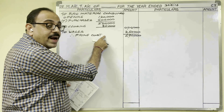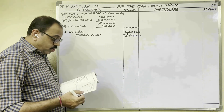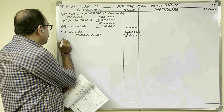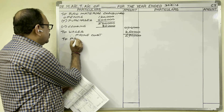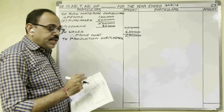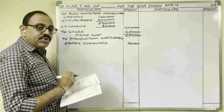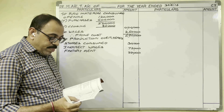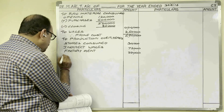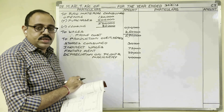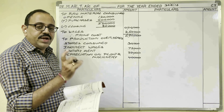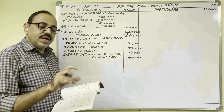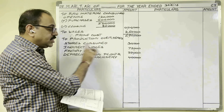To the prime cost we add indirect manufacturing expenses. The heading is production overhead. Under this: stores consumed 30,000 rupees, indirect wages 72,000 rupees, factory rent 24,000 rupees, depreciation on plant and machinery 40,000 rupees. Sales are finished goods sold, so they go in the trading account. Purchase of finished goods also goes in the trading account. So indirect expenses are completed.